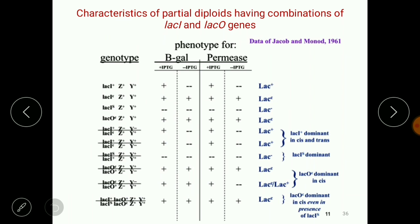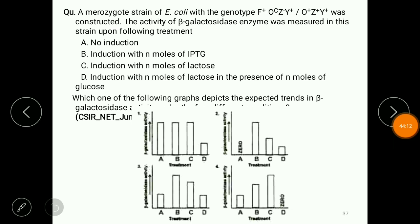This is the summary of the different cases discussed. Go through the slide to review beta-galactosidase activity in the presence and absence of inducer for all cases. If you understood these concepts, you should be able to solve the following question. The question involves a merozygote with OC, Z-minus, Y+ on one strand and O+, Z+, Y+ on the other. Beta-galactosidase enzyme activity is measured under different conditions.